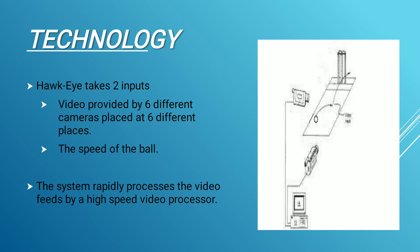Hawkeye takes two inputs: the video provided by six different cameras placed at six different positions, and the speed of the ball. The system repeatedly processes the video feed through a high-speed video processor, which combines the camera feeds to determine the speed of the ball, its frequency, and where it is when the batsman is about to hit it.